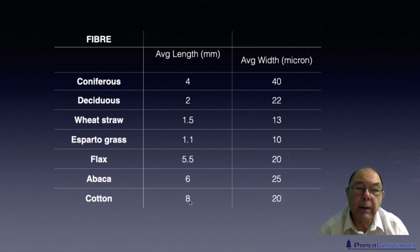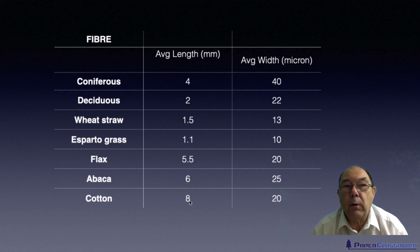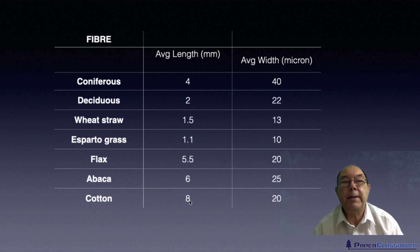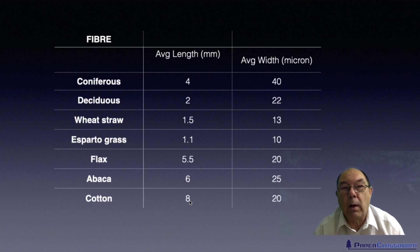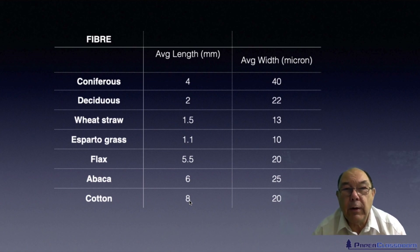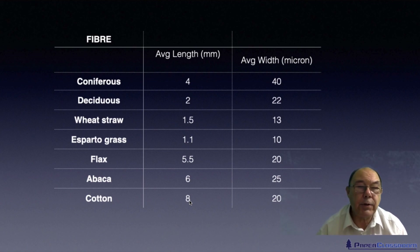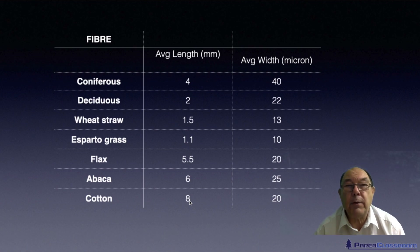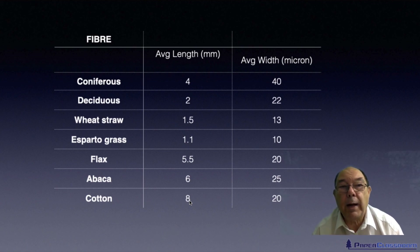Cotton — we're really talking about what you call cotton linters. They grow the cotton plant, take off the long fibres from the cotton boll to spin into thread to make clothing, and the material that's left — cotton linters — has an average fibre length of about 8 millimetres. And that's what the papermakers buy.